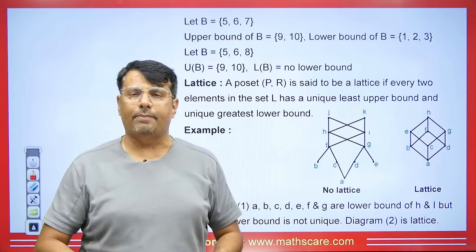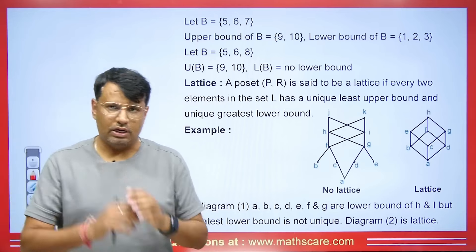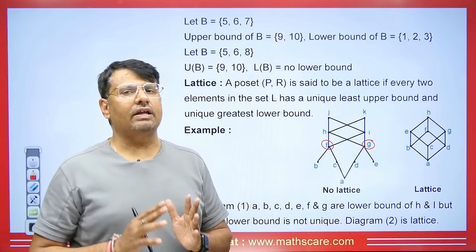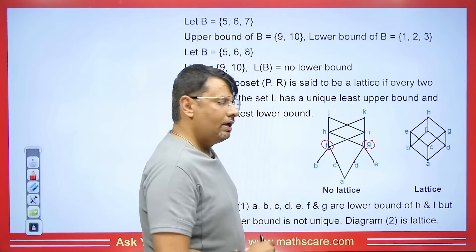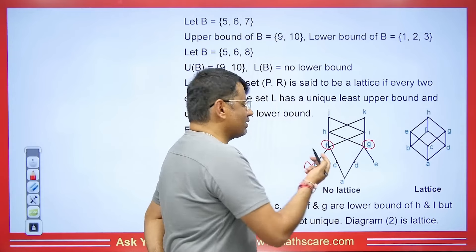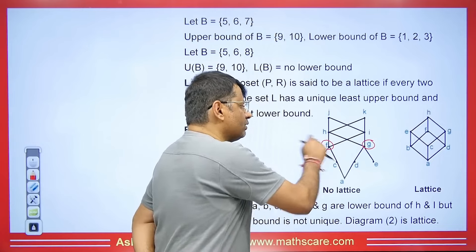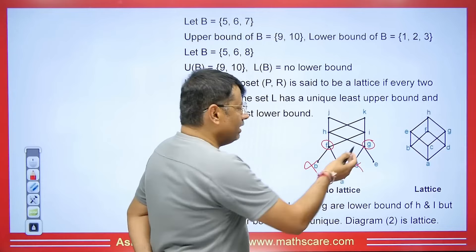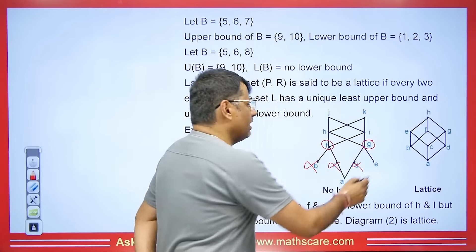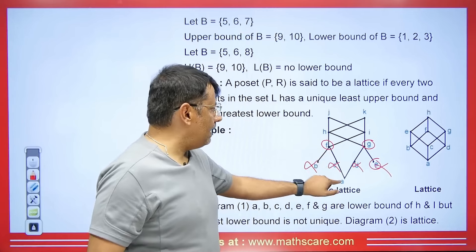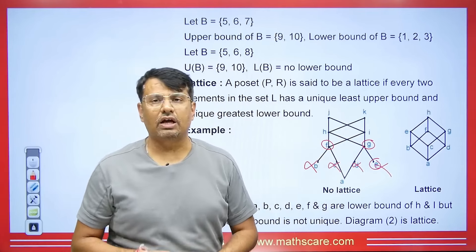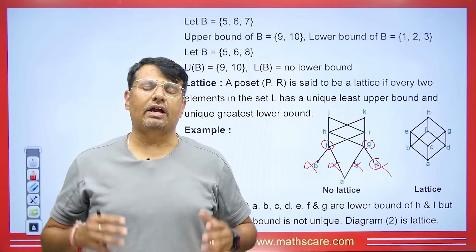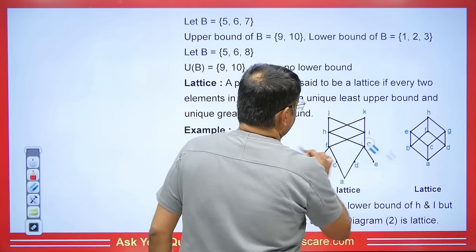Let's understand an example. For a diagram with elements, we take two elements f and g and check lower bounds. b is relating to f but not to g — so it can't be a lower bound. c is relating to f but not to g — also impossible. d is relating to g but not to f. e is relating to g but not to f. Only a is relating to both f and g, making it the unique greatest lower bound.